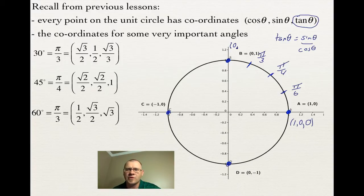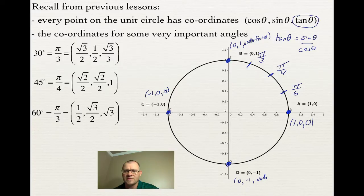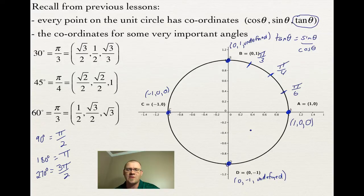At the left point, coordinates are (-1, 0), so tan equals 0 divided by -1, giving 0. At the bottom, coordinates are (0, -1), so tan is undefined. The top point (0, 1) corresponds to 90 degrees or pi over 2. The left point is 180 degrees or pi. The bottom is 270 degrees or 3 pi over 2. And back to the start, we have 0 or 360 degrees, known as 0 or 2 pi.